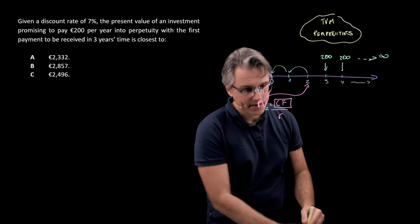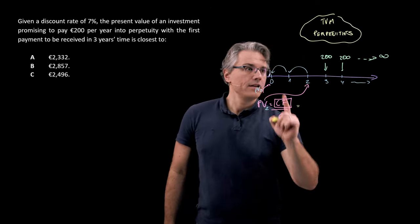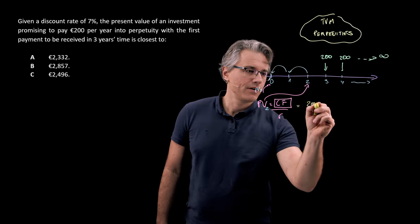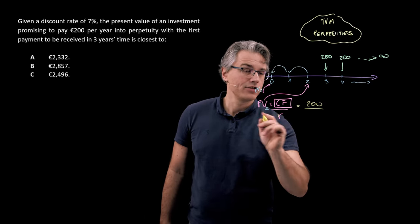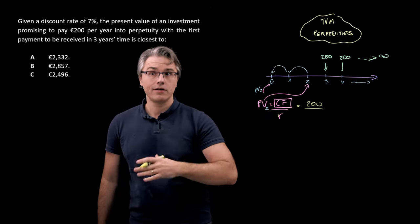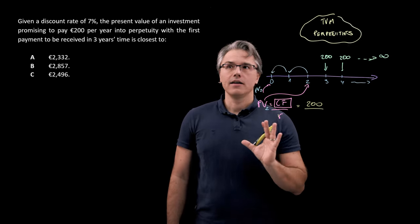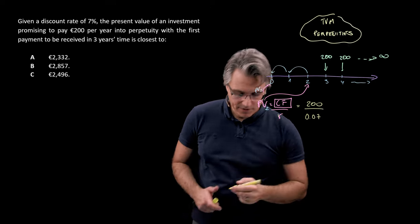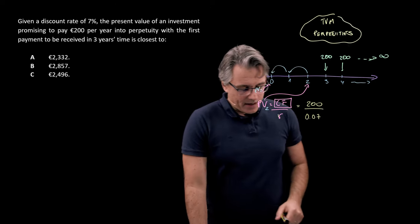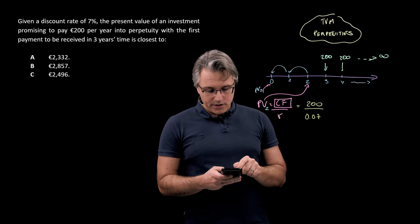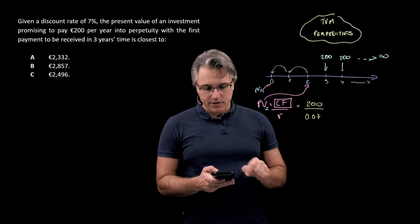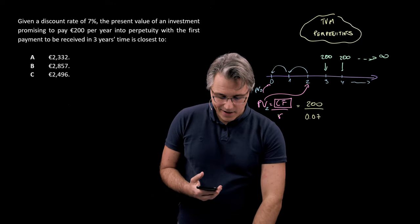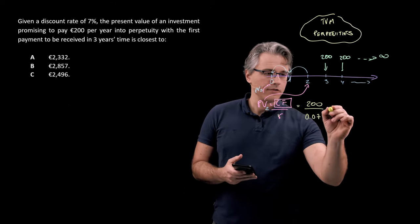The PV at time two is basically 200 divided by just R, not one plus R, just R. So that's 7% or 0.07. Let's see what that is: 200 divided by 0.07 equals 2857.14.